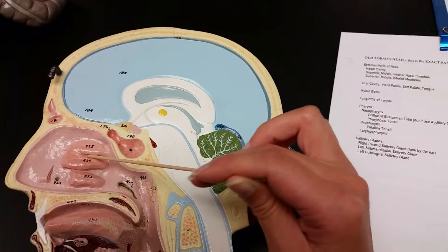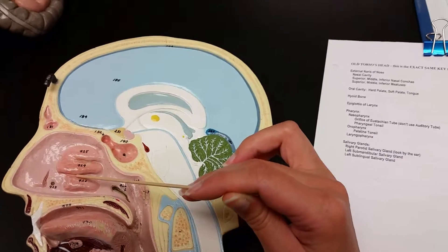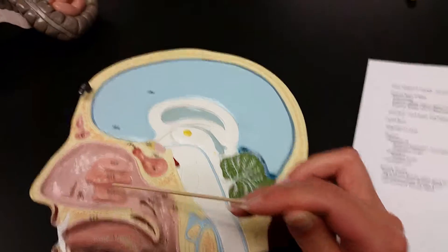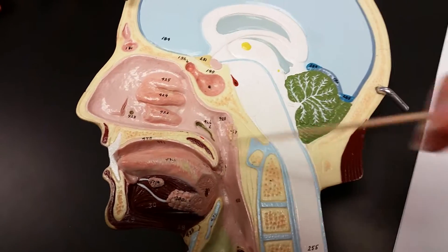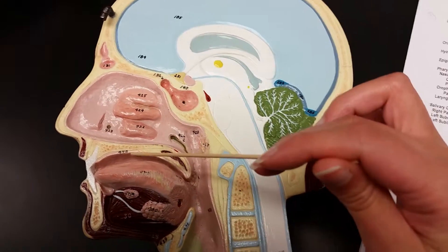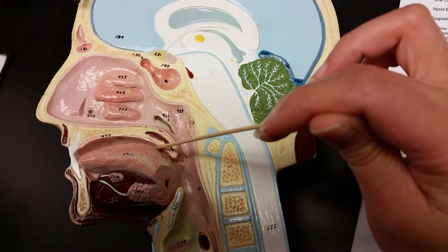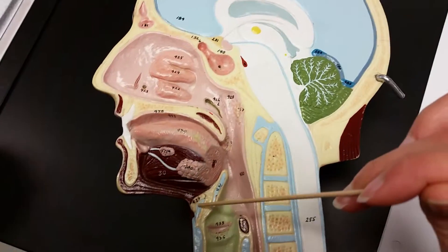Superior meatus is here, the middle meatus is here, inferior meatus is here. The oral cavity would be here. The hard palate would be here, the soft palate would be back here. The tongue is here. The hyoid bone would be here.